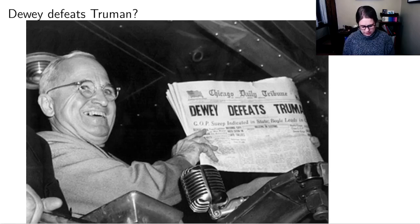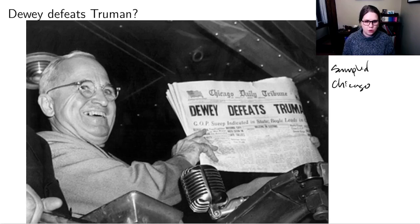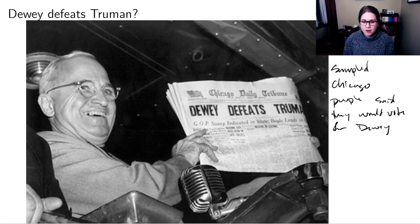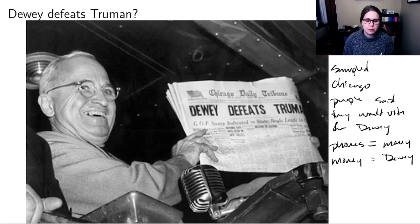The reason for this mistaken headline is that the Chicago Daily Tribune had sampled people in Chicago and asked who they were going to vote for — Dewey or Truman — and overwhelmingly people said Dewey. What went wrong? It turns out they only sampled people with telephones. At the time, not everyone had a phone; people with phones tended to have more money, and money was equated to voting for Dewey. So they under-sampled the people who were going to vote for Truman because they didn't have phones.